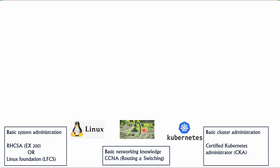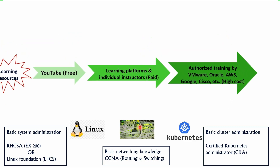On the networking side, you should have basic networking knowledge at CCNA level — CCNA Routing and Switching. You should know what a subnet is, what a VLAN is, what protocols are, how routing is done, and how switching is done. For Kubernetes, you should acquire at least the CKA (Certified Kubernetes Administrator) exam, which covers only basic cluster administration. Note that you are not required to be a CCIE — CCNA-level basics are more than sufficient to work in the cloud area.